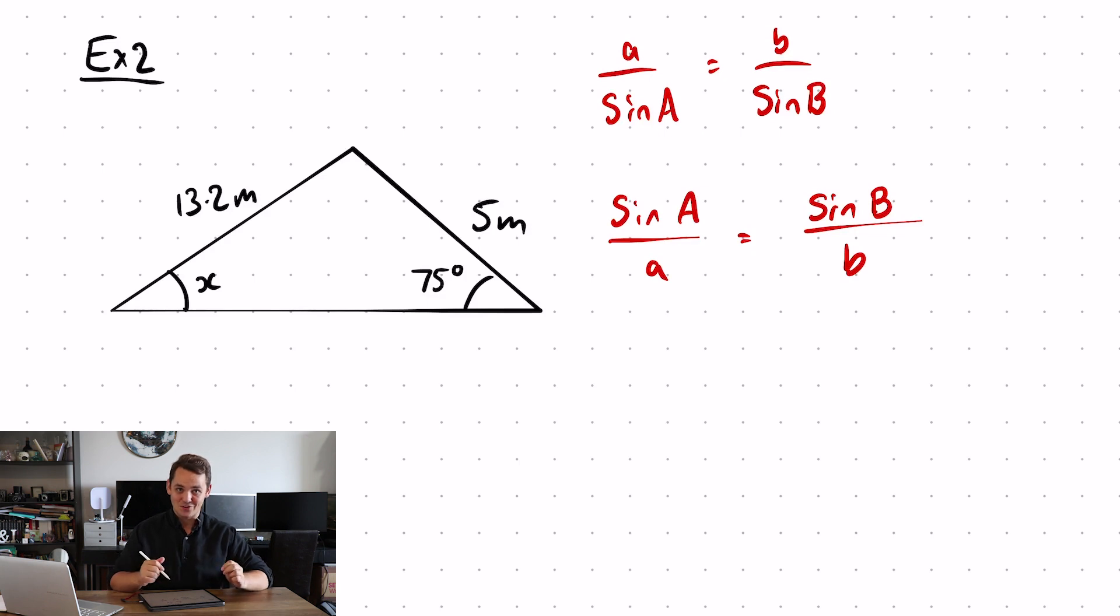So again, first things first, always label your sides and always label your angles. So my unknown angle, I'm going to call capital A, the side opposite lowercase. My other angle, capital B, side opposite lowercase B, and then put it into the formula.